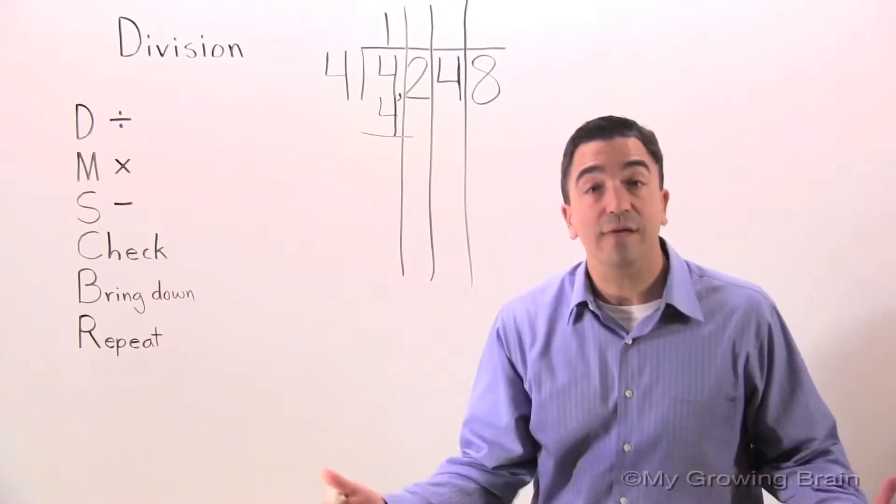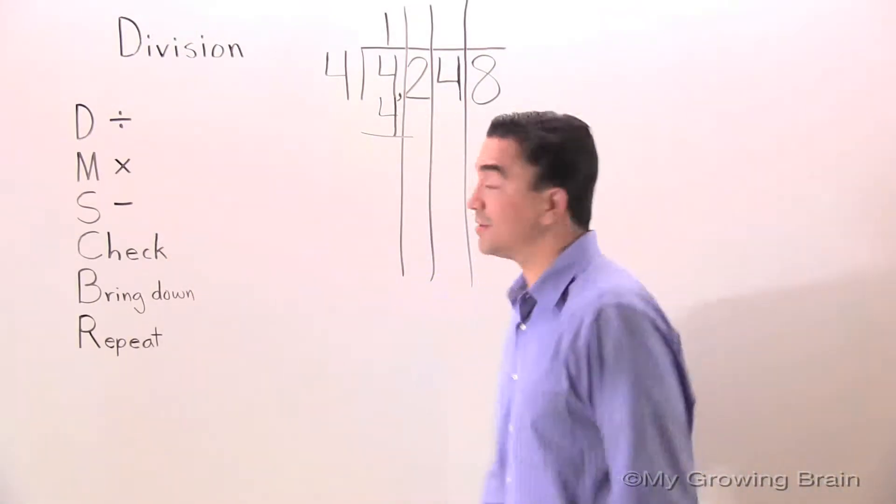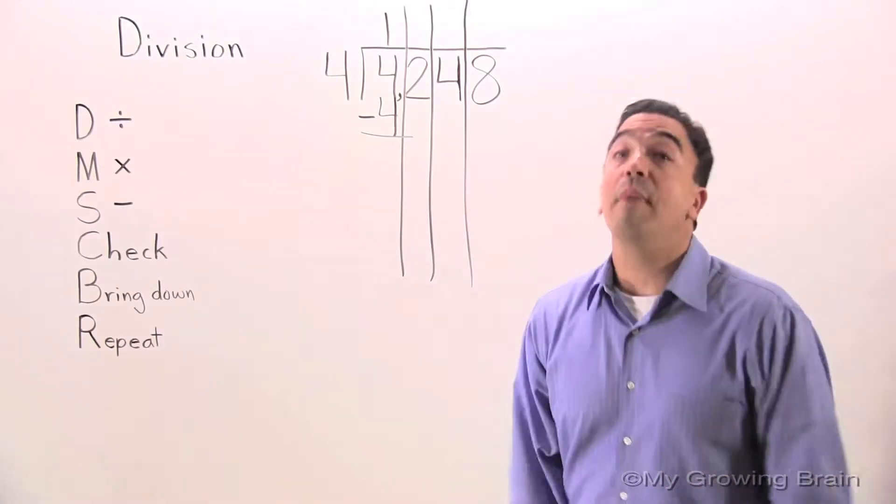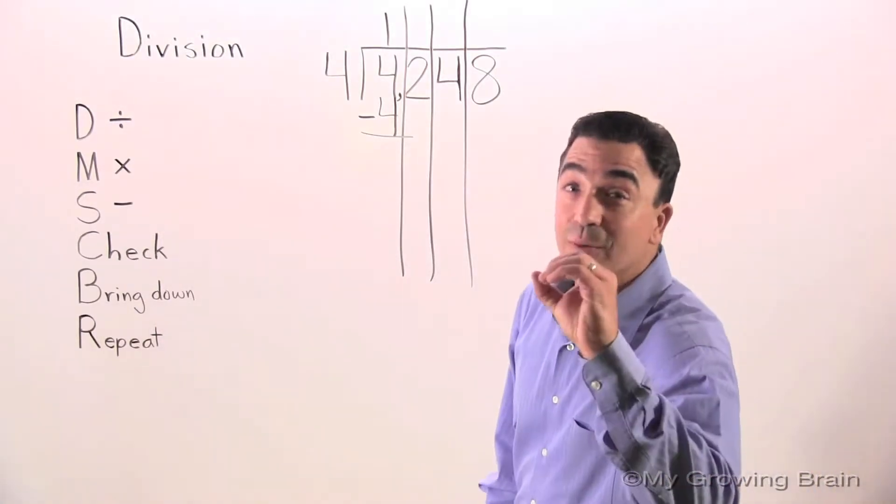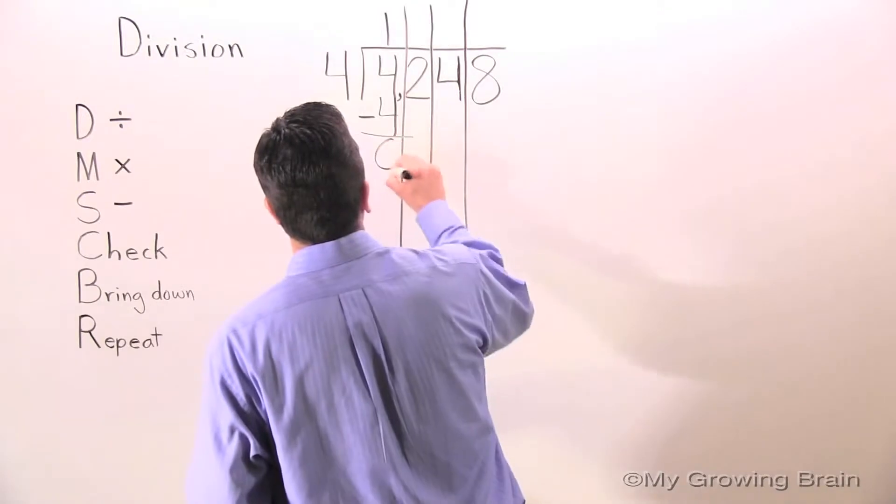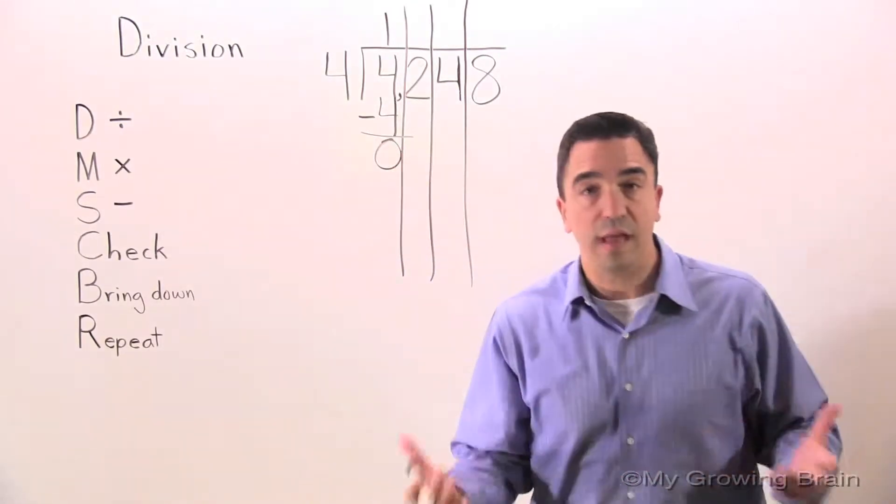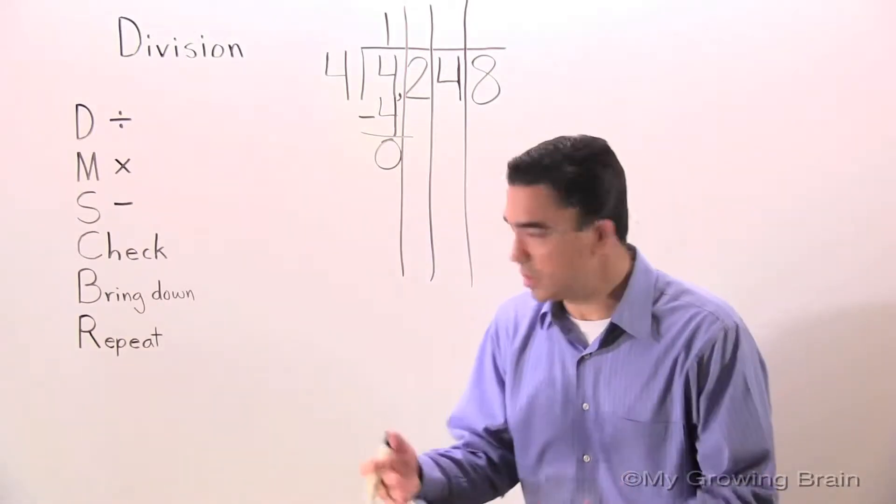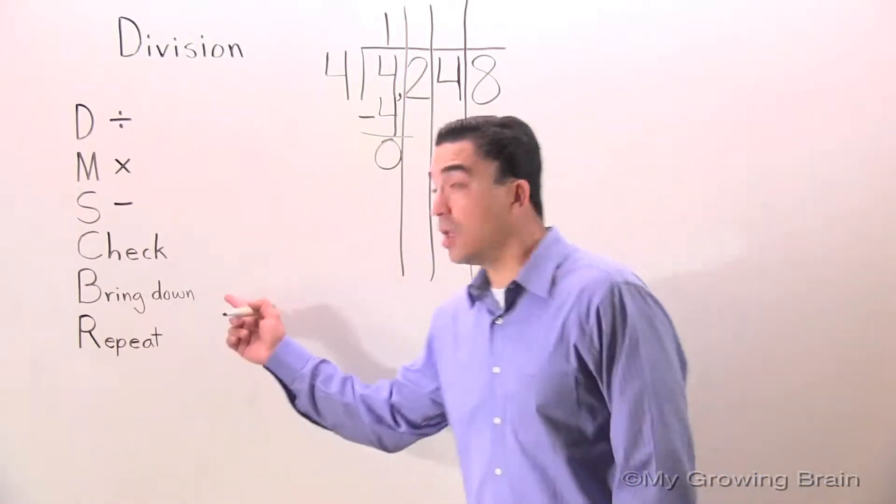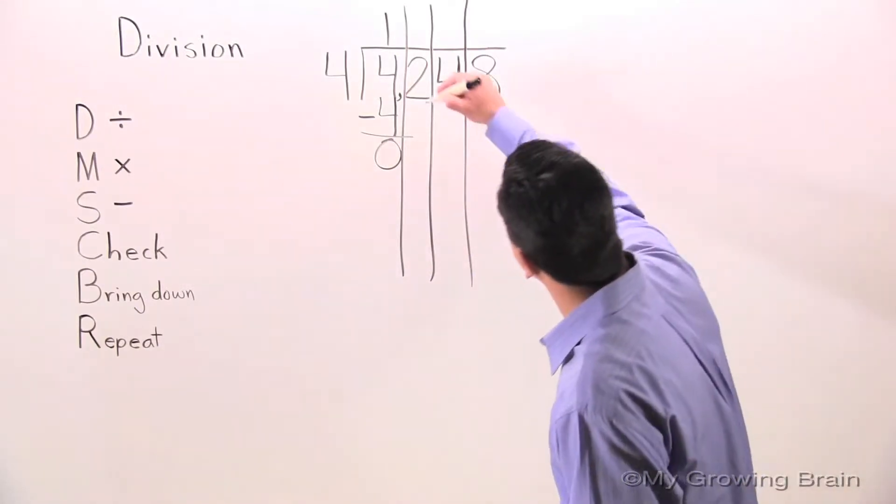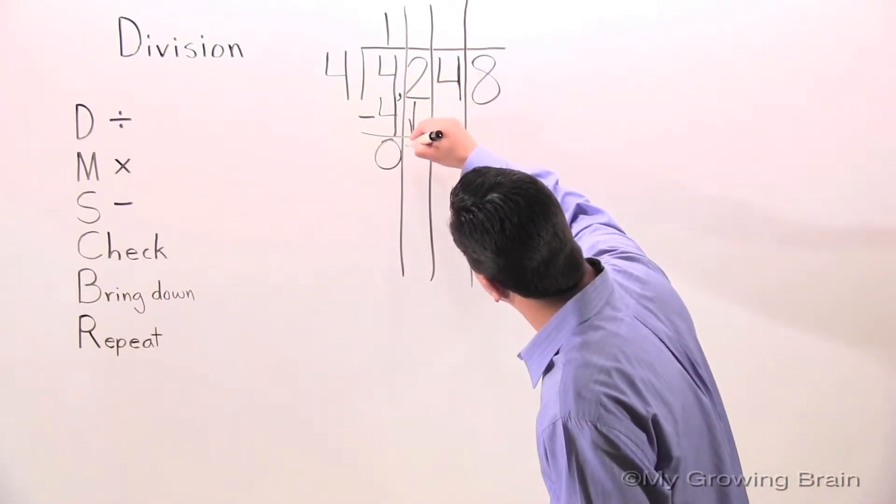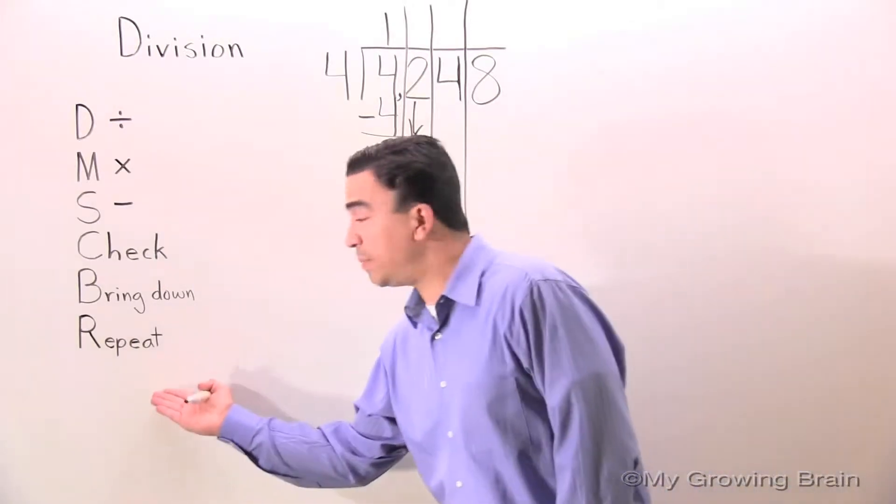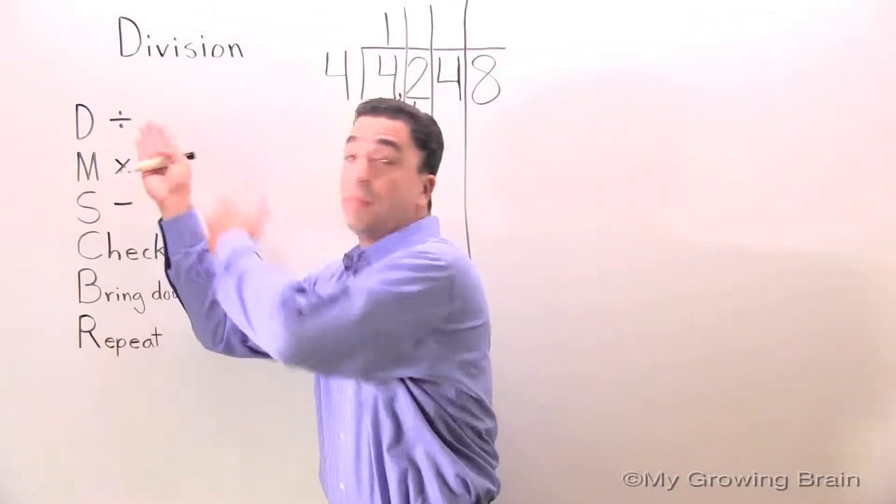Next step: subtract. 4 minus 4 is 0. Next step: check. 0 is less than 4, keep on going. Next step: bring down. Next step: repeat, go all the way to the top.